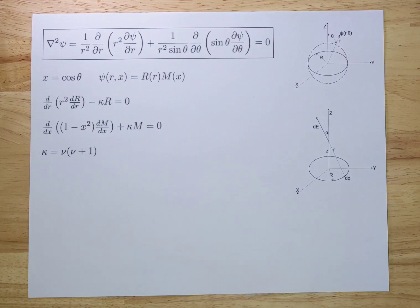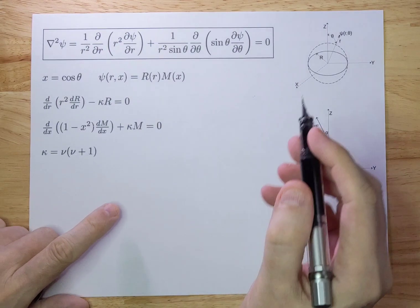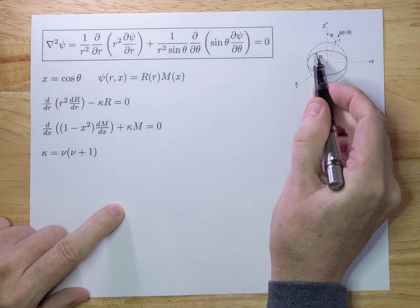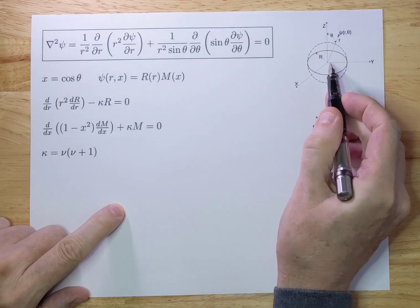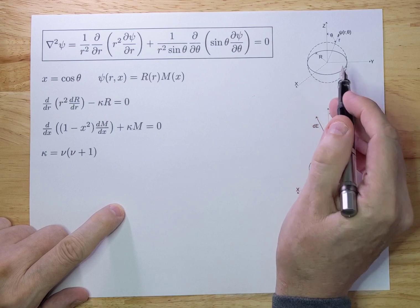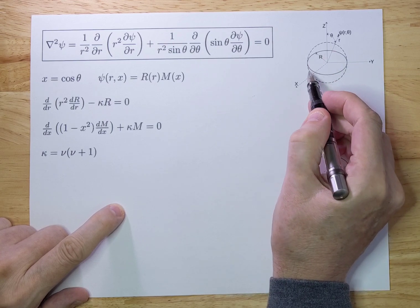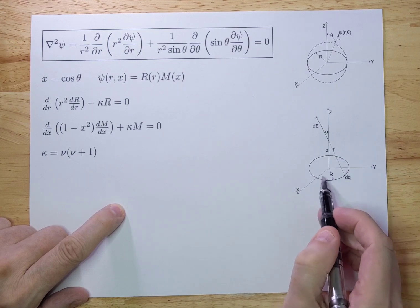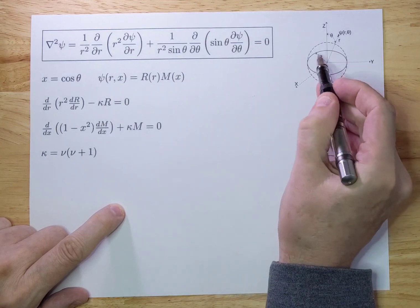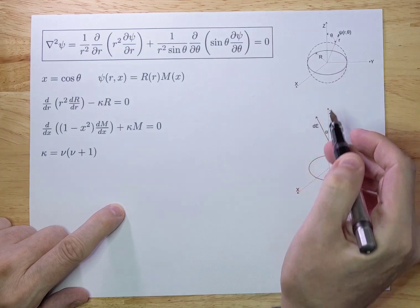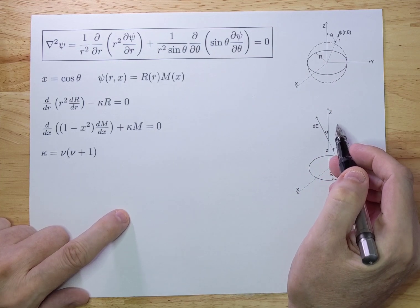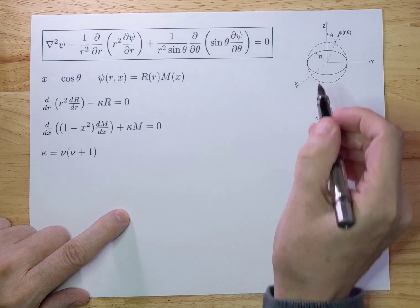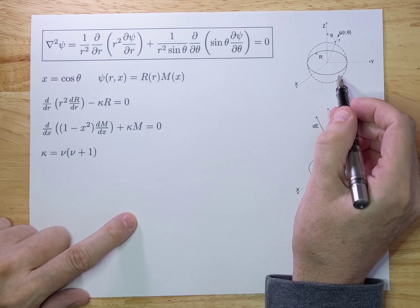Today we're going to calculate the potential of a charged ring at a certain point in space. We have a charged ring with a uniformly distributed charge, and if you add up all the charges you get Q. So the total charge on the ring is Q but it is uniformly distributed.